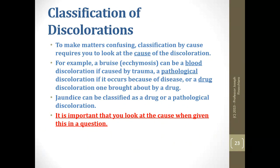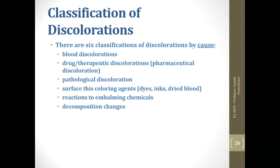Classification by cause requires you to look at the cause — but it's never going to be that easy because it will be embedded in a word problem with multiple distractors. For example, a bruise or ecchymosis can be a blood discoloration if caused by trauma; a pathological discoloration occurs because of disease; a drug discoloration is brought about by a drug. It's important to look at the exact cause when given a classification question.